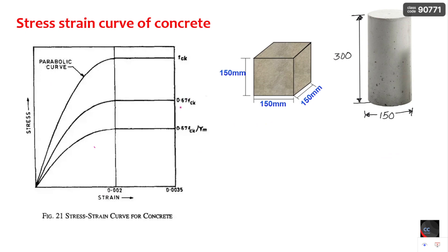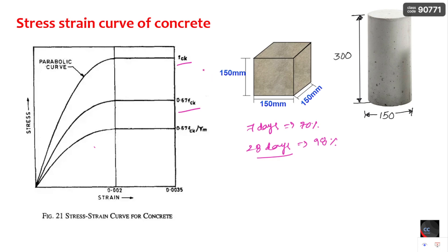0.67 FCK is the compressive strength of concrete. Have you ever wondered why FCK is taken as 0.67 FCK? Let us derive how this 0.67 FCK came about. We test cube specimens to get compressive strength — 7-day strength is approximately 70%, and 28-day strength is about 98 to 99% of the strength achieved in the cube specimen. This 28-day strength is taken as FCK, the characteristic strength.